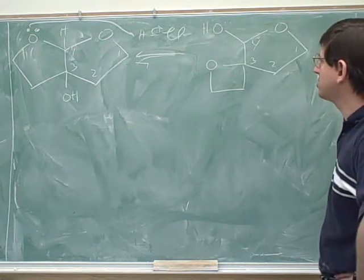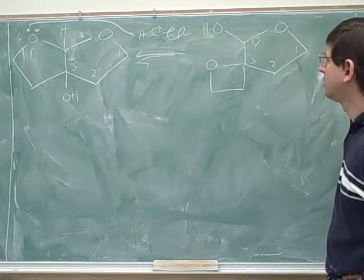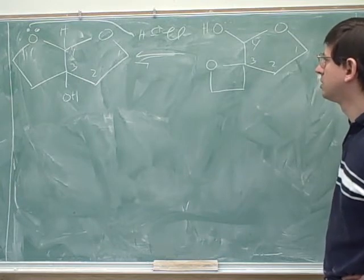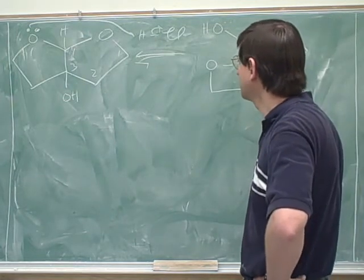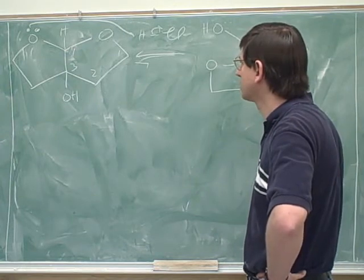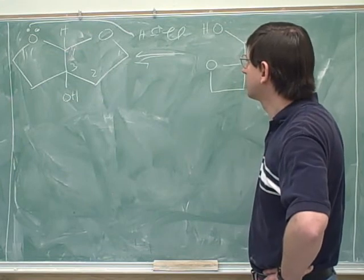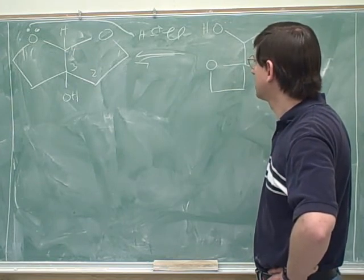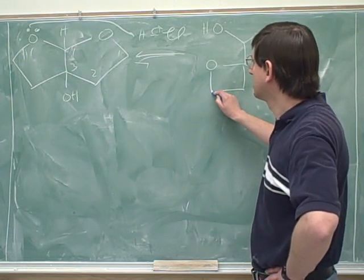So let's think about the changes that we need to have happen here. So we just tried protonating the O's in the ring, and that's clearly not working. So maybe we should try protonating the OH and do something with that. So we need to form a new electron and bring those electrons down.